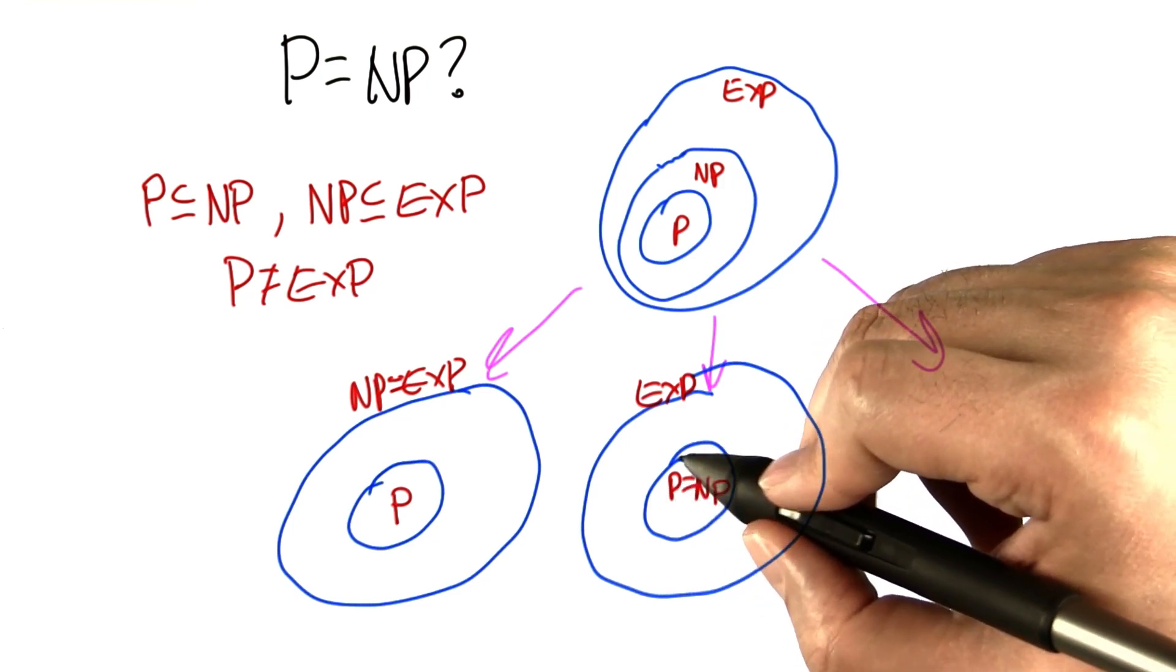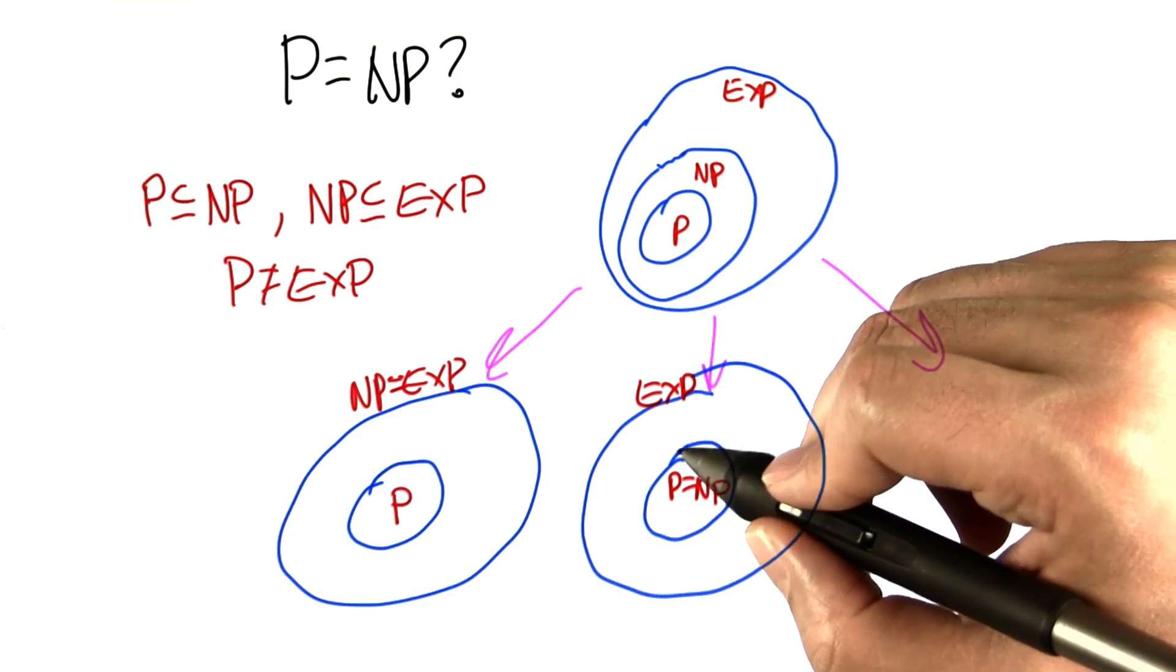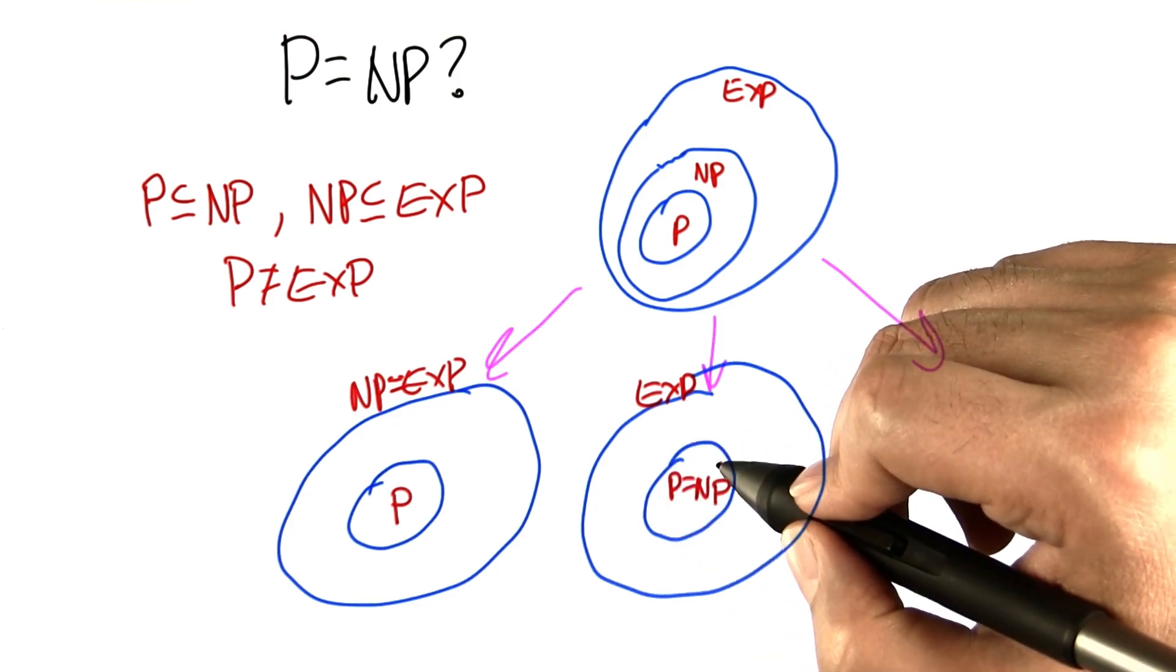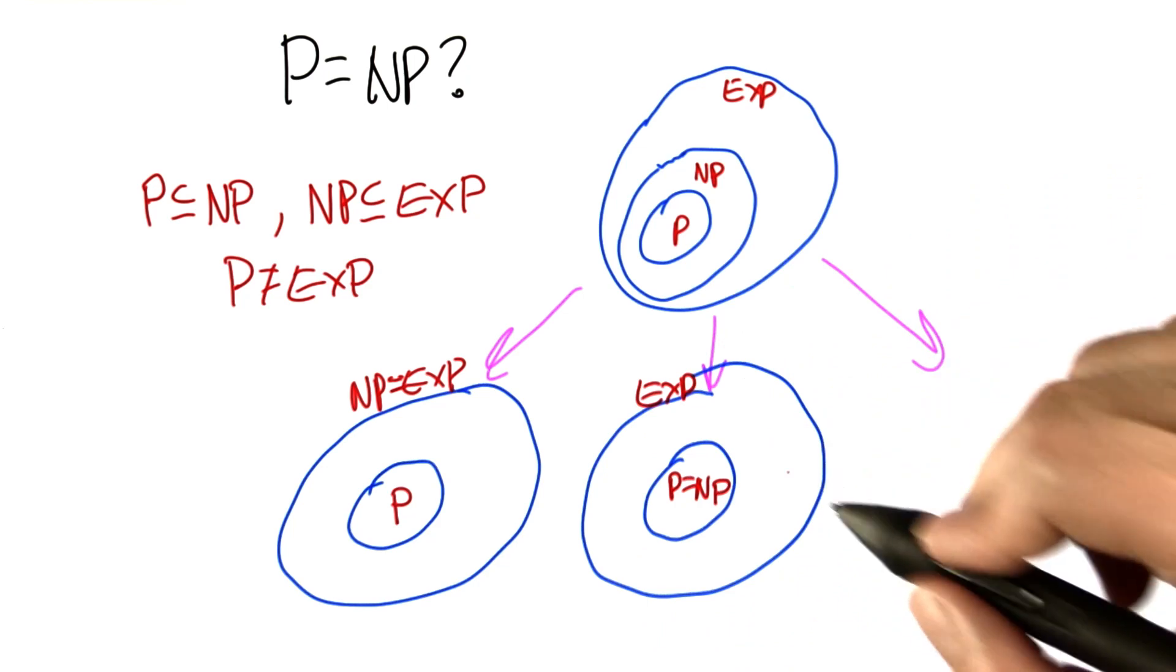So, the problems that we can solve in non-deterministic polynomial time might be exactly the same as the ones that we can solve in polynomial time, which both would be then different from exponential time.